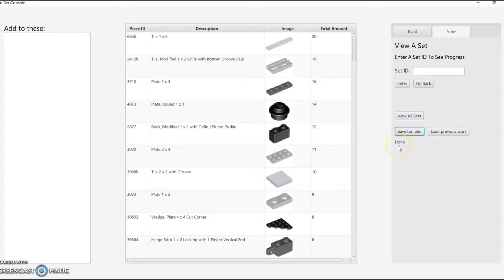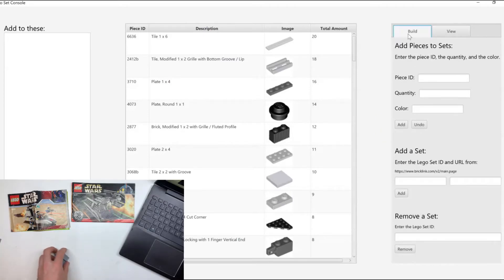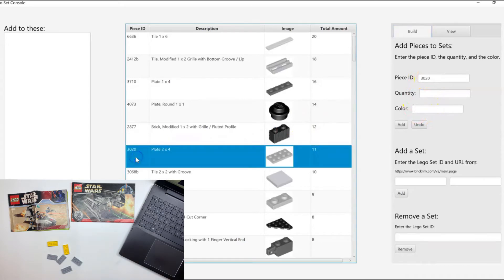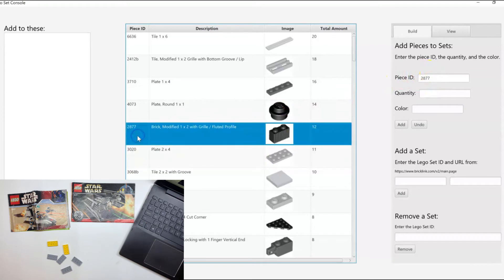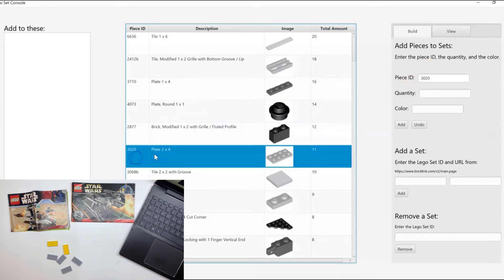So now I'm actually going to start building the sets. Here I've found a couple of 2x4 pieces, some light gray and some yellow. After I have a bunch, I'm going to enter the quantity of the light gray ones first. I added an autofill feature so that I only have to click on the piece instead of entering the piece ID every time.